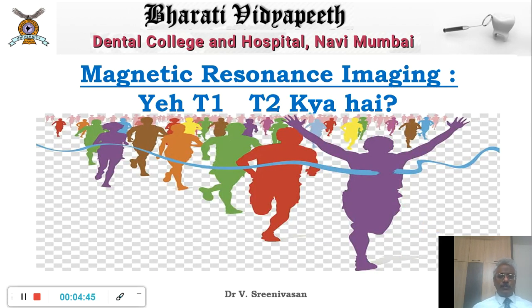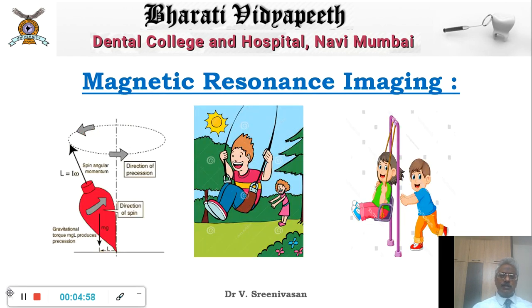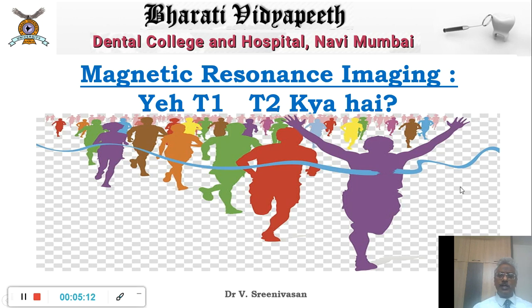Then we have the concept of T1 and T2 imaging, which is very important in MRI — the basic sequences you get. If you hit the proton so it becomes more horizontal, slowly because of the magnetic field it will tend to come back. Some come back faster and some are very slow — like a running race. Those which return back fast are fat molecules, and this is called T1. Fat has a small T1, so fat images are called T1 weighted images.